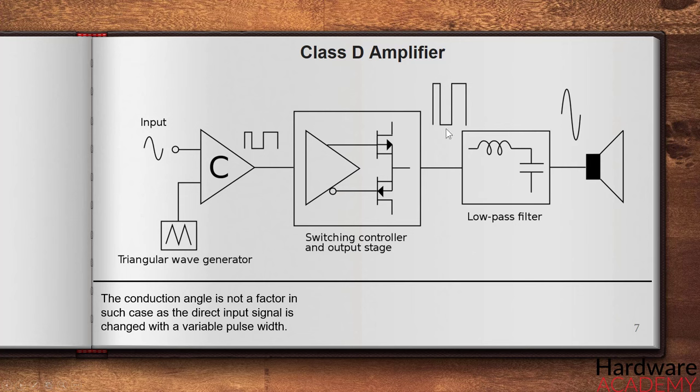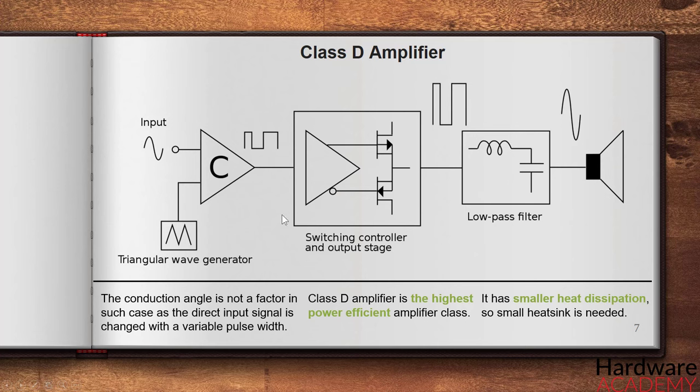As the pulse's duration is related with the analog signal, it is again reconstructed using low-pass filter across the output. Remember that class D amplifier is the highest power efficient amplifier class. So it has smaller heat dissipation, so small heatsink is needed. The circuit requires various switching components like MOSFETs which have low ON resistance. It is widely used topology in digital audio players or controlling the motors as well, but we should keep in mind that it is not a digital converter.